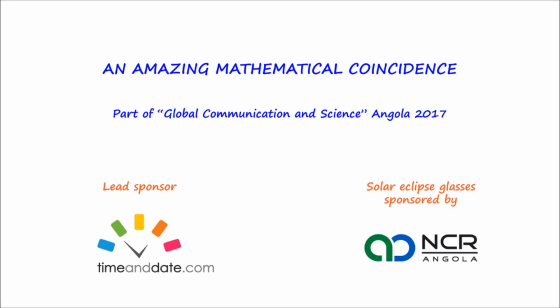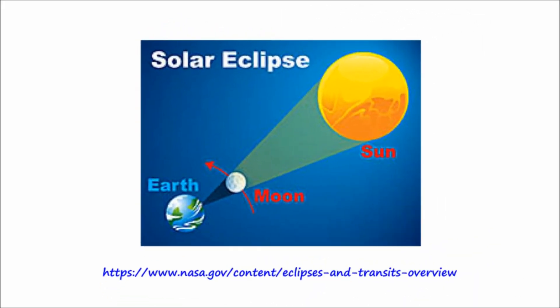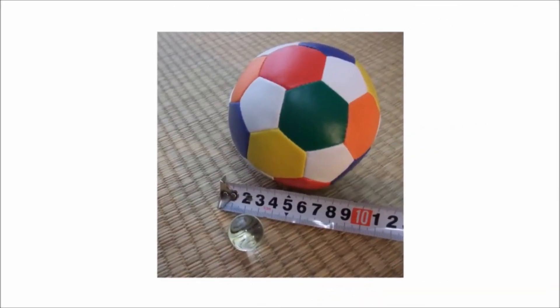The magic of solar eclipses hinges upon an amazing mathematical coincidence that can be difficult to appreciate when you look at a not-to-scale diagram of the Earth, Moon and Sun. So let's take a look at a scale model of the Earth, Moon, Sun system.